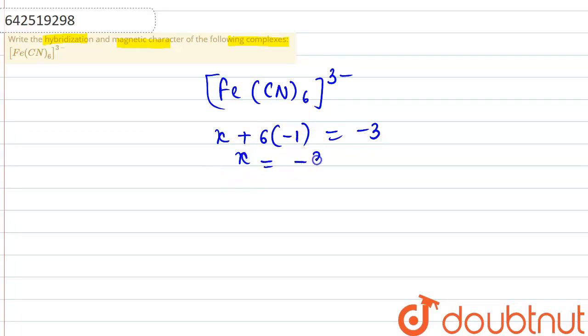So from here, the oxidation state of Fe comes out to be plus 3. Iron is present in plus 3 oxidation state.